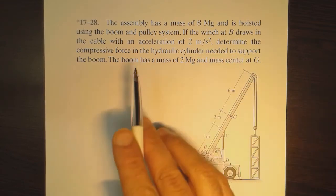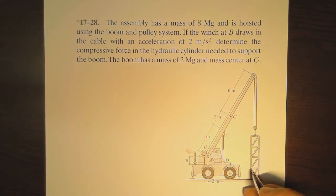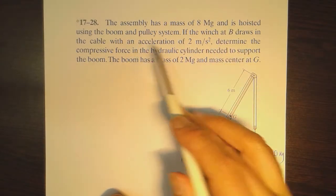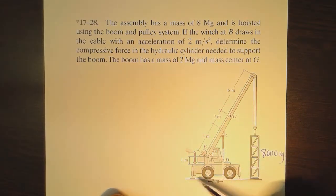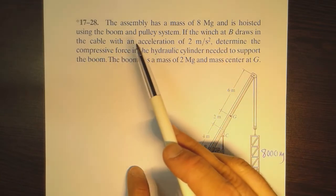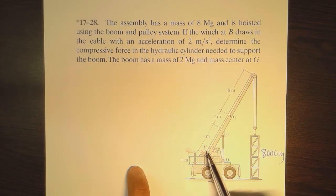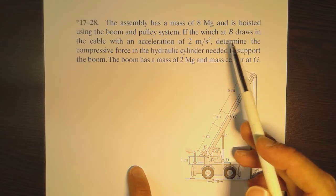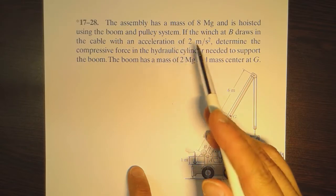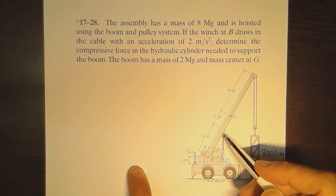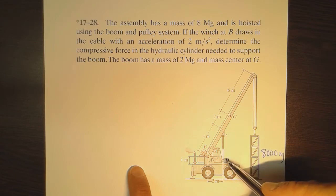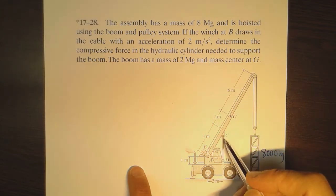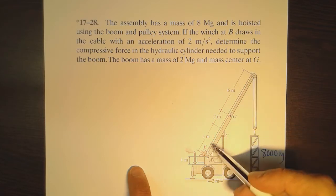The assembly has a mass of eight megagrams, which is eight thousand kilograms, and it's hoisted using the boom and pulley system. The winch draws in the cable with an acceleration of two meters per second squared. We are required to determine the compressive force in the hydraulic cylinder, which is supporting the boom as a result of the lifting of this assembly.